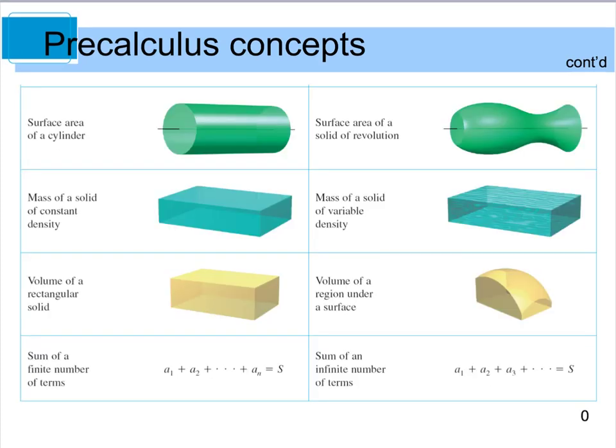Now, another thing that we'll get into at the end of the year, with pre-calc, we can find surface areas of cylinders or masses of solids with constant densities. But with calc, we can actually find the surface area of a solid of revolution, like some of these pieces, and this, again, will come later on at the end of the year.